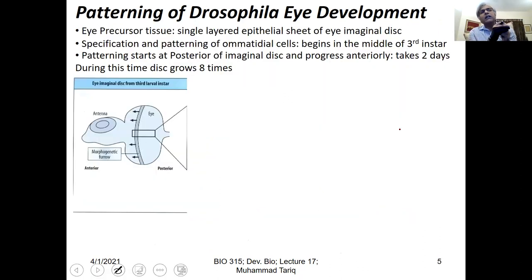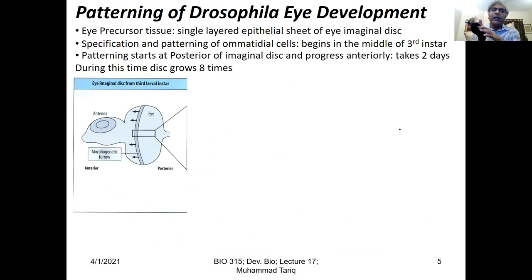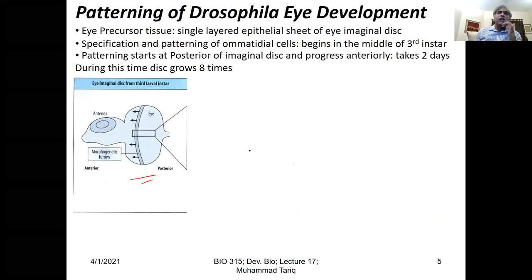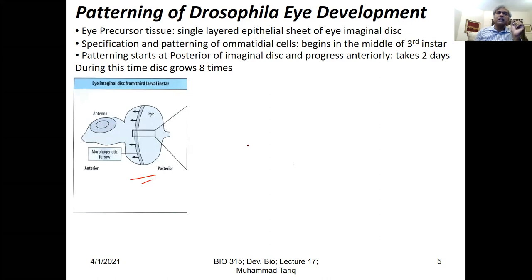The patterning actually takes place at the third instar larva, starting at the middle of that stage. However, the eye precursor cells — these eye-antennal discs — have their fate somehow determined at the embryonic stage. Using eyeless-GAL4, we see expression very early at the embryonic stage at the neuronal level, toward the anterior side. Eyeless is a homolog of Pax6, which we covered in an earlier lecture.